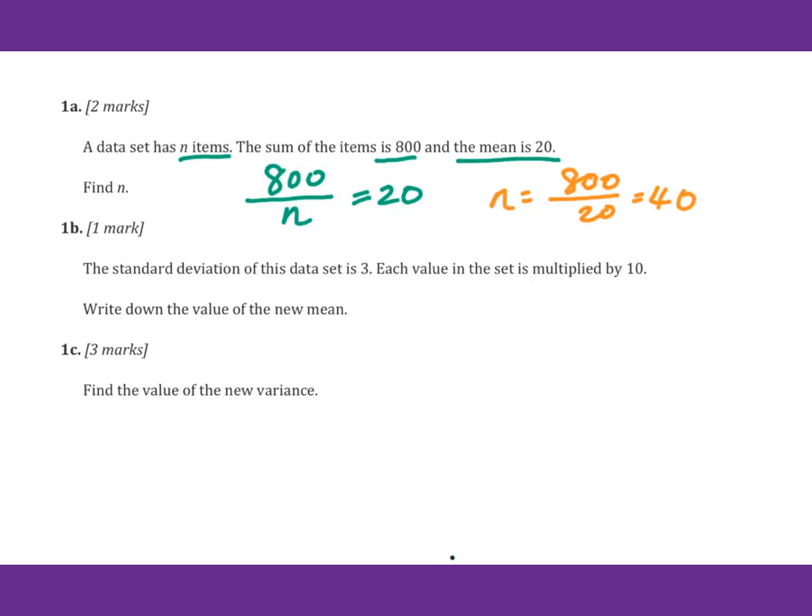Problem 1b: The standard deviation of this data set is 3. Each value in the set is multiplied by 10. Write down the value of the new mean. We know the mean equals x1 plus x2 plus... x20 over n, that means over 20.